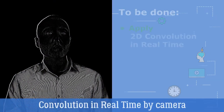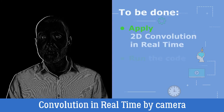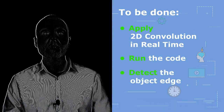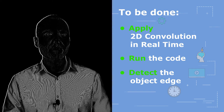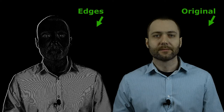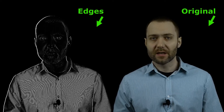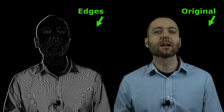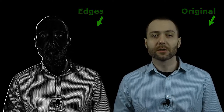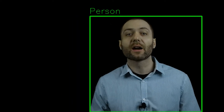In this lecture we are going to apply 2D image convolution to every frame obtained from camera. We will run the code, detect edges using a Sobel filter and convolution operation, find the biggest contour, and draw a bounding box around the object on the original RGB video stream with a label.